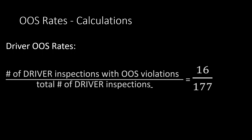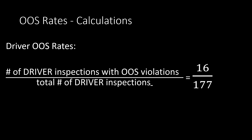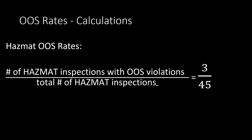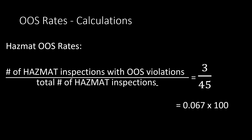We do the same to calculate the driver out-of-service rate. We take the number of driver inspections with out-of-service violations — that's 16 — divided by the total number of driver inspections, that's 177, which gives us 0.09 × 100 = 9%. For hazmat: we take 3 divided by 45, which equals 0.067 × 100 = 6.7%.